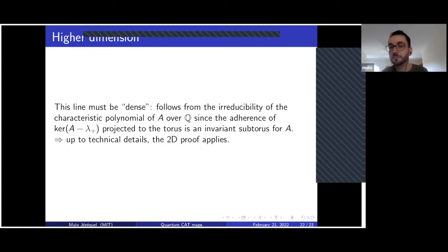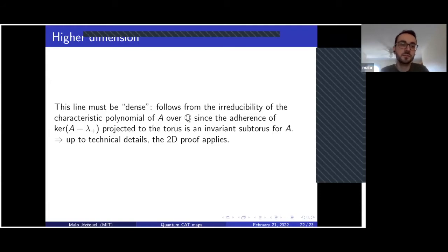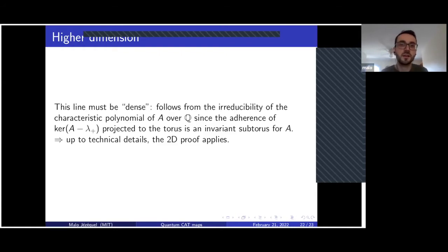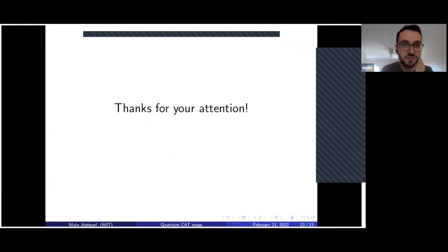One last thing: actually this irreducibility assumption is a consequence of the main results in the paper, because you can still say something about the support of semi-classical measures when the characteristic polynomial is not irreducible. In the example that I gave earlier with not fully supported semi-classical measures, our theorem acknowledges this fact — the most general version acknowledges this fact. I think I will stop here. Thank you for your attention, and I'm happy to take a few questions if there are some.